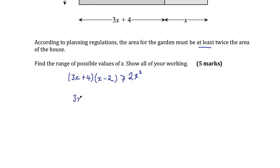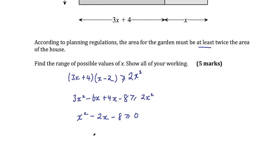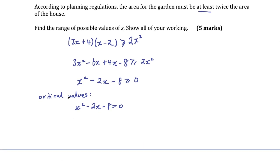Expanding the double brackets: 3x² - 6x + 4x - 8 ≥ 2x². Moving everything to the left hand side: 3x² - 2x² gives x², then -6x + 4x is -2x, minus 8, all ≥ 0. Now find critical values by writing x² - 2x - 8 = 0. We can factorize: factors of 8 that make 2 are 4 and 2, so (x - 4)(x + 2) = 0. Critical values are x = 4 or x = -2.